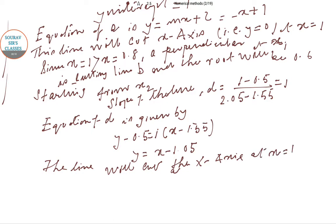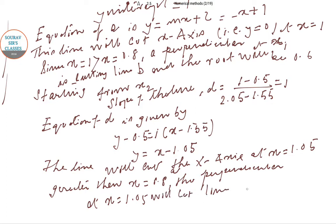At x = 1.05, which is greater than x = 0.8. The perpendicular at x = 1.05 will cut line c and not b. And therefore...